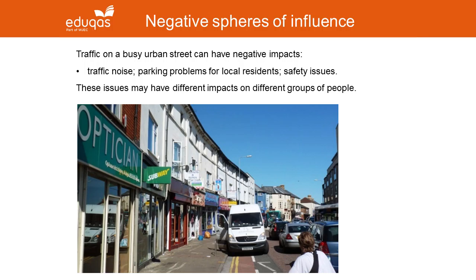Just as some features in our environment can create positive spheres of influence, others create negative impacts in the immediate area around them. In an urban area, busy traffic can have negative impacts with its noise, the parking problems it creates for local residents, and safety issues for people trying to cross the road. These impacts tend to be quite localised, so the sphere of influence is only quite small.